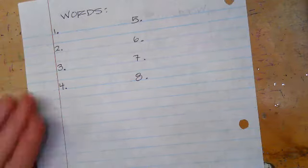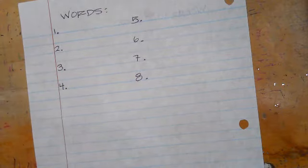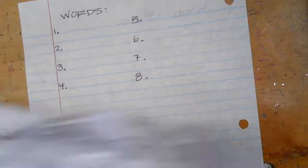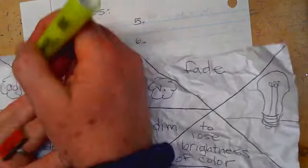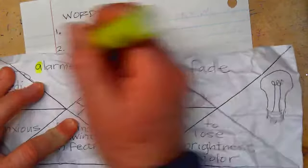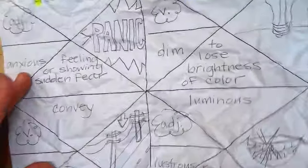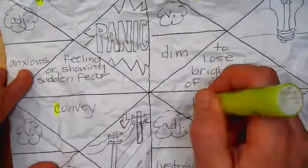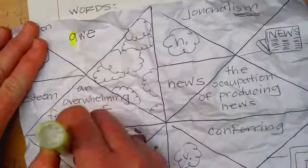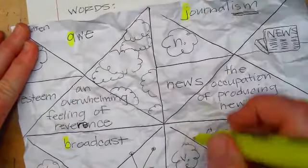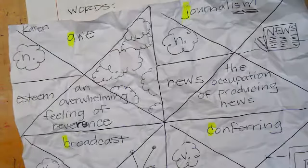Okay, so on our list, I just fished my list out of the recycling bin. And my diamond that I made, that I filmed yesterday. So I'm going to look for A in alarmed, F in fade, C in convey, L in luminous. I'm also looking for A in awe, B in broadcast, J in journalism, and C in conferring. So when I start thinking about alphabetical order,